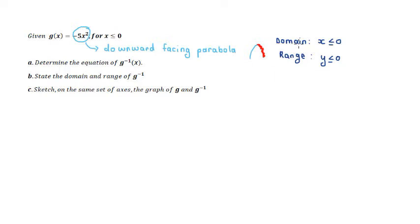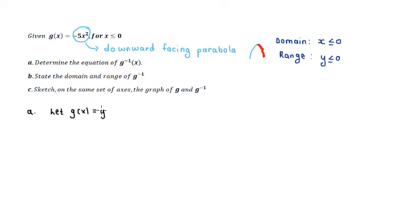Remember that the domain and range of the original function are going to swap around and become the domain and range of your inverse function. Notice the notation used: G to the minus one of X. We are able to use this notation because of this restricted domain, because now the inverse function is going to be a function. The first question asks us to determine the equation of G to the minus one of X. We start the same way: let G of X equal Y, so Y equals negative five X squared.